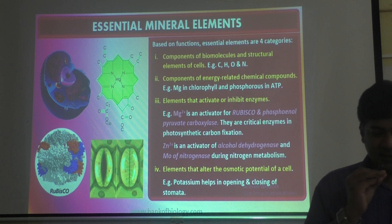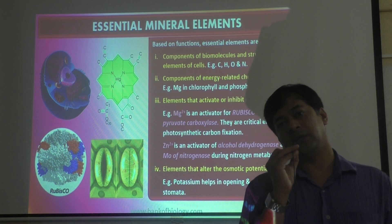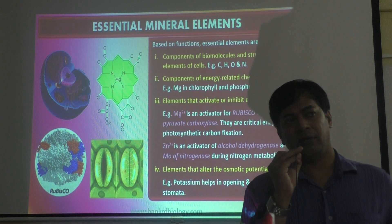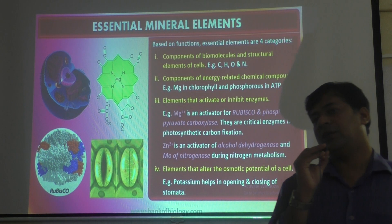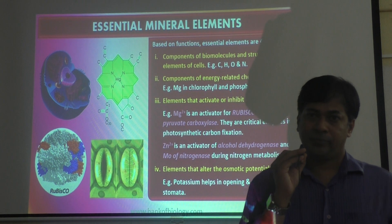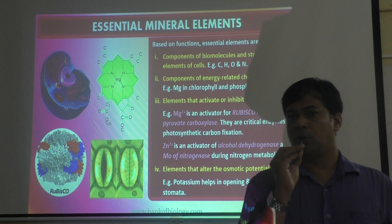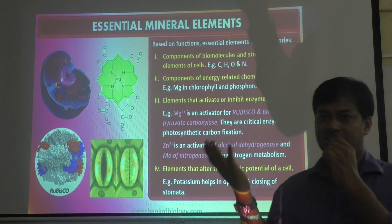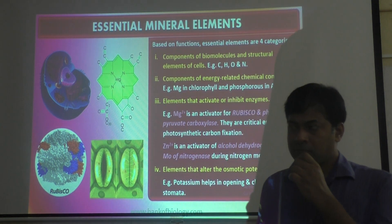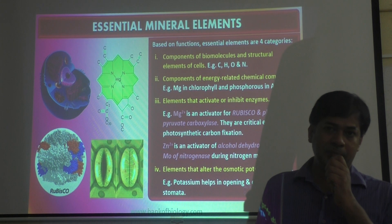The second category is components of energy-related compounds. Some elements produce energy-containing compounds like ATP (adenosine triphosphate). Phosphorus is one element that produces ATP — the P in ATP stands for phosphate. Magnesium is present in chlorophyll, which is required for trapping sunlight and converting solar energy into chemical energy. Phosphorus in ATP forms the energy currency of the cell.